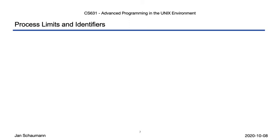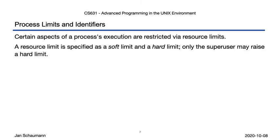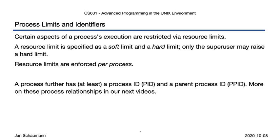Time for a recap. We've seen that processes are limited in certain ways. These limits are specified as soft and hard limits. A process may lower both, but raise the soft limit only up to the hard limit — only root can raise a hard limit. We saw that process limits are, as the name suggests, process-specific, which explains why the ulimit command must be a shell built-in. We also started to look at process relationships, but we'll cover those in much more detail in the coming videos. And that's it for today. Thanks for watching, and until next time. Cheers!